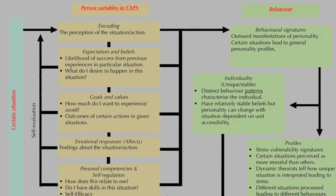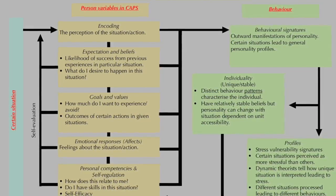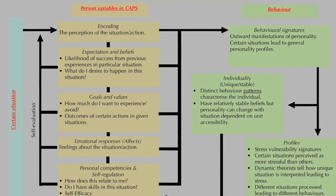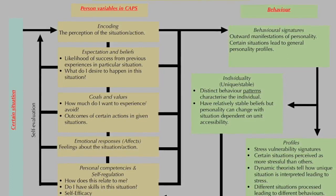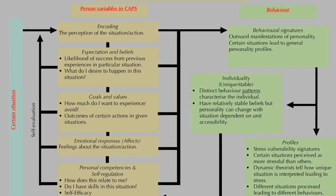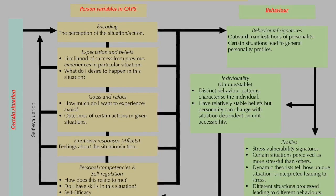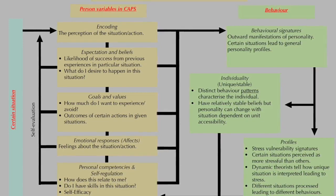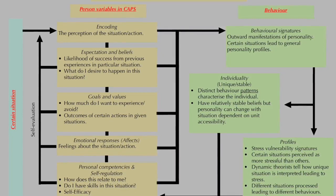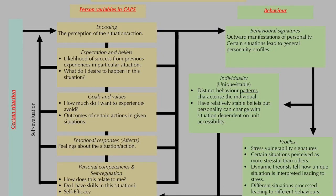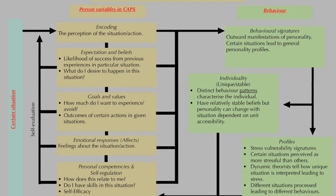All of these four subsects of the person variables — expectations and beliefs, goals and values, emotional responses and affect, personal competencies and self-regulation — then influence encoding. It is a bi-directional relationship whereby information processing or encoding affects all of these, and all of these affect encoding.